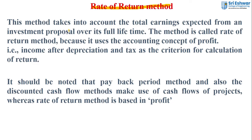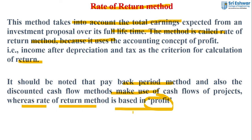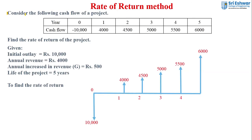Next is the Rate of Return Method. This method takes into account the total earnings expected from an investment proposal over its full lifetime. It uses the accounting concept of profit, that is, income after depreciation and tax. Unlike the payback period and discounted cash flow methods which use cash flow, the Rate of Return Method is based on profit. The problem: consider the cash flow of a project over 5 years — minus 10,000; 4,000; 4,500; 5,000; 5,500; 6,000.